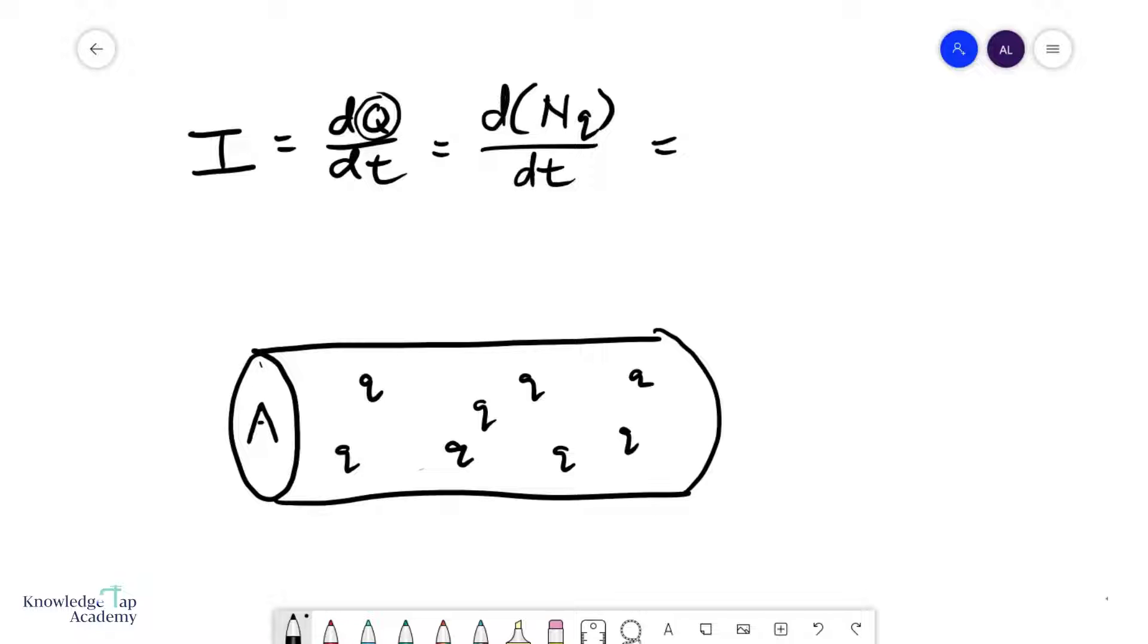And then, we're going to split the number of charge carriers big N into the number of charge carriers per unit volume small n times the volume V. So let me just write that down. N is the charge carriers per unit volume, q dt.